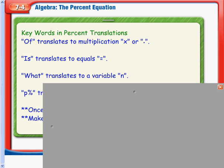What is going to translate to our variable n, meaning that's what we are going to be solving for. If they say what percent, we're solving for n. If they say what number, we're solving for n.